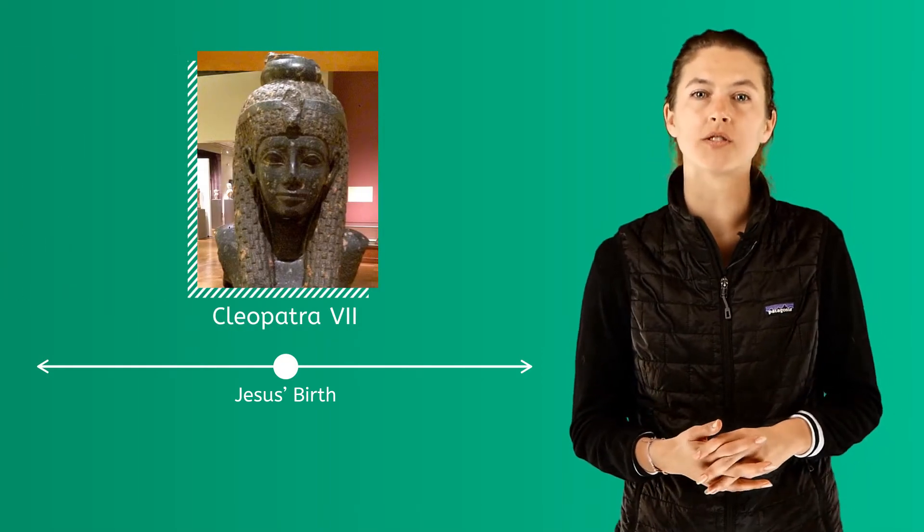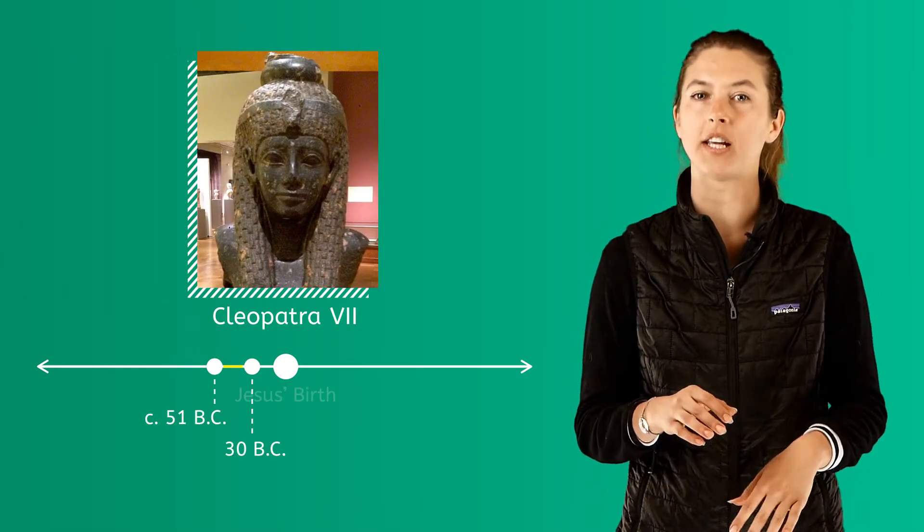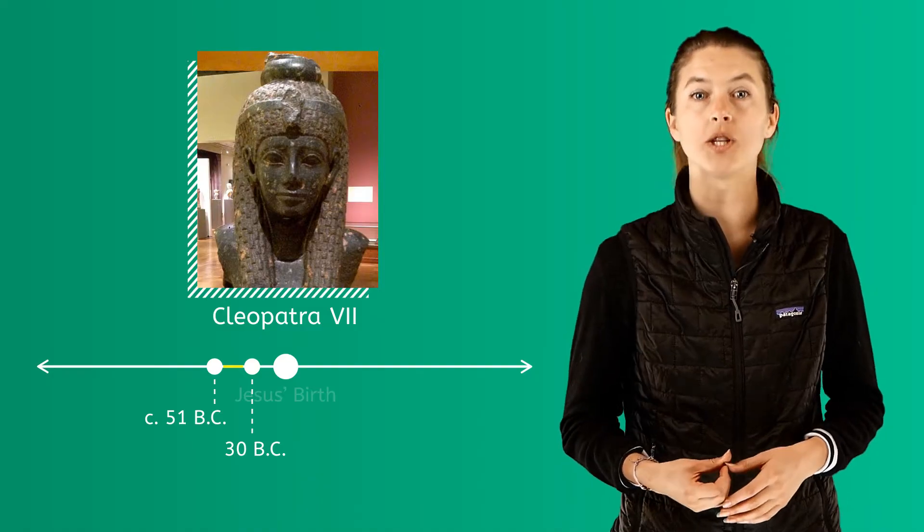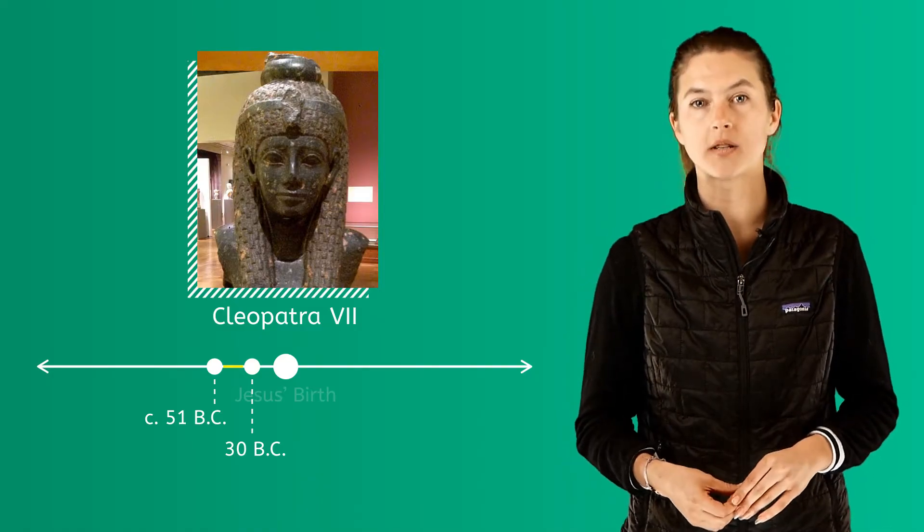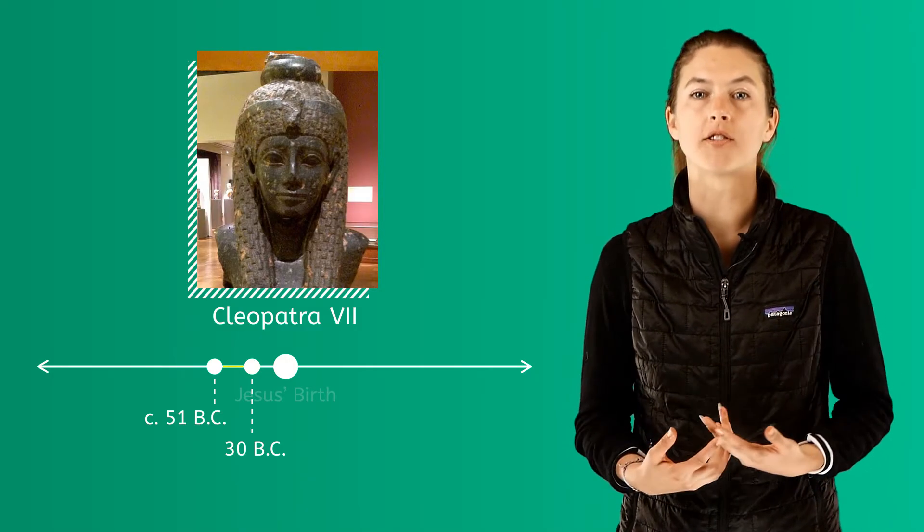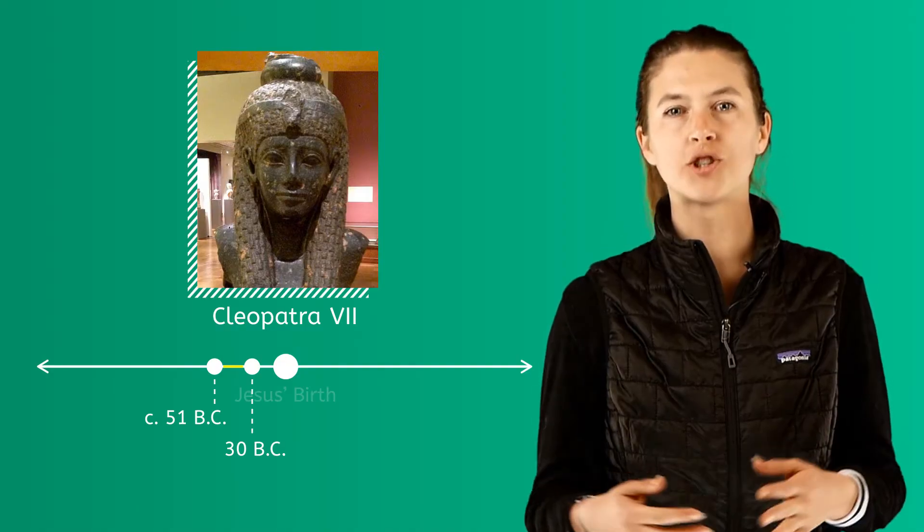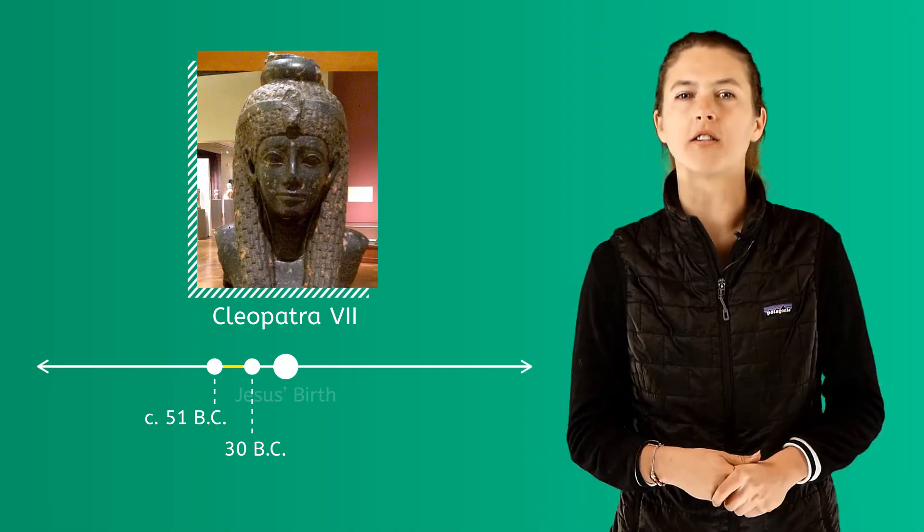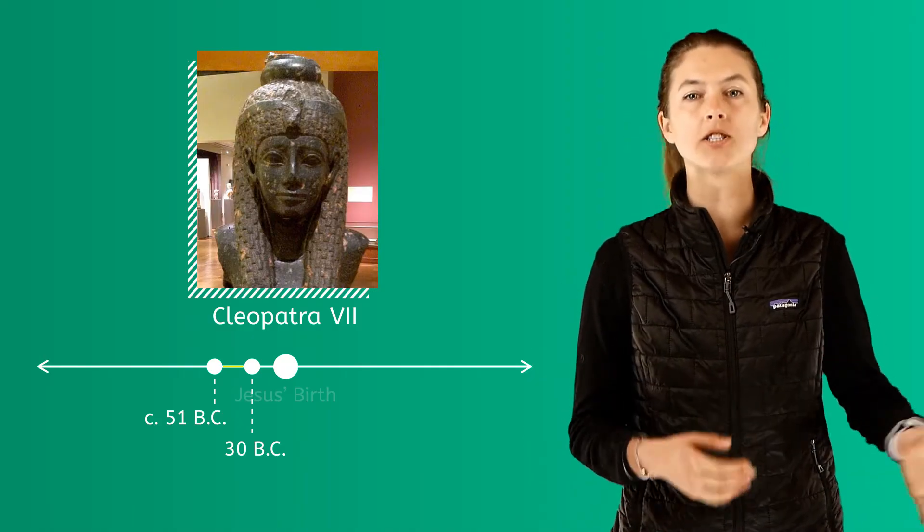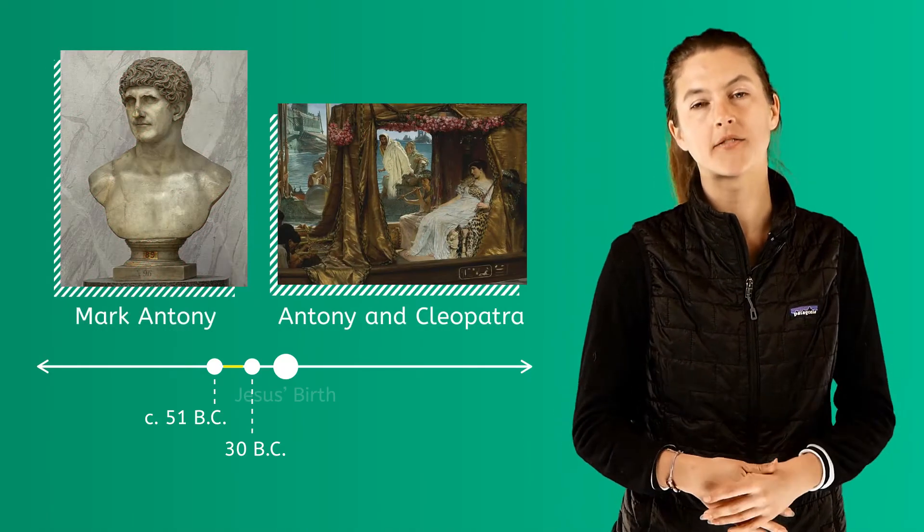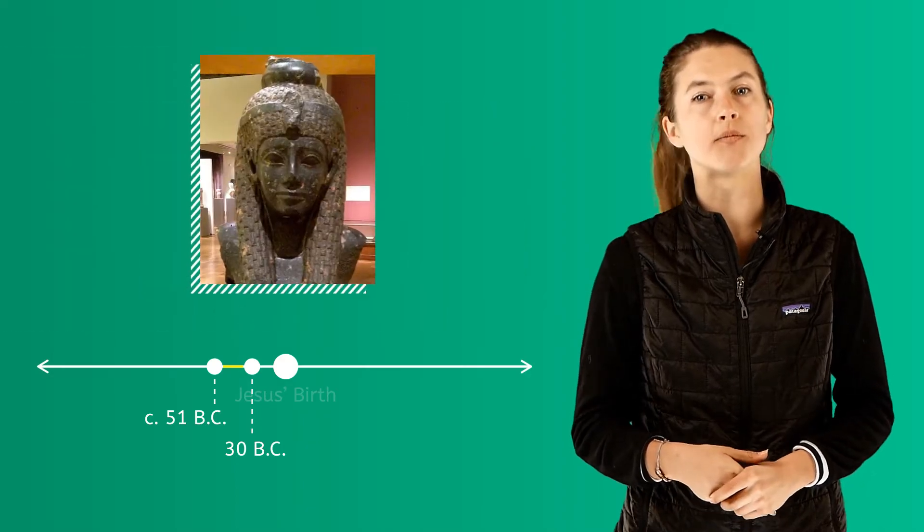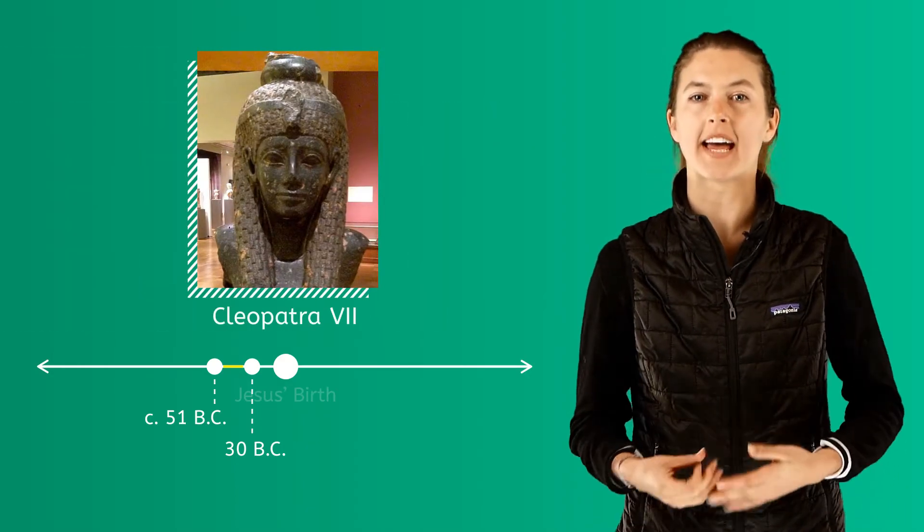Cleopatra VII ruled from circa 51 to 30 BC and she was the last pharaoh of Egypt. She tried to hold off the Romans from taking over the Egyptian kingdom but failed. She ruled beside three pharaohs including her young son, and she was the girlfriend of Mark Antony of Rome. She is rumored to have been the most beautiful woman that ever lived.